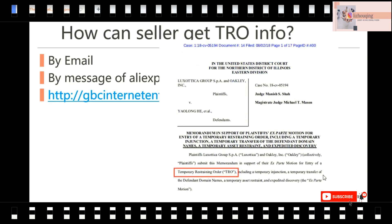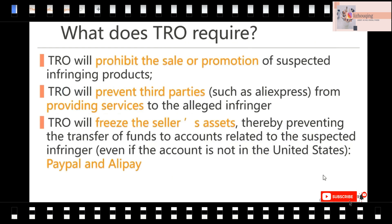This is a typical TRO ban paper, the document. What does the TRO require? It will prohibit the sale or promotion of the infringing product — actually the suspected infringing product. Although it is named 'suspected,' it is almost 100% infringing, because if you were not infringing, they would not hire a lawyer to take you to court. The TRO will also prohibit the third party — that means the platform, AliExpress — from providing services to you, the infringer.